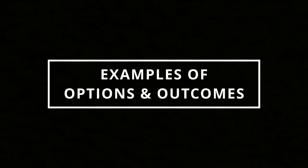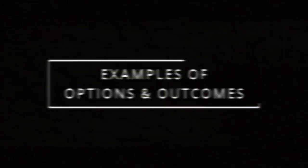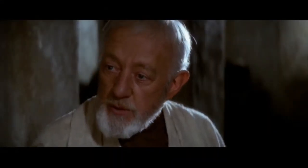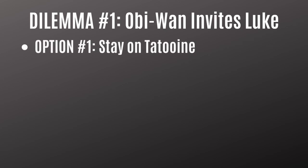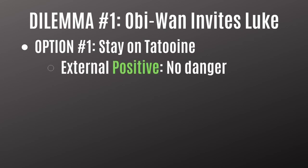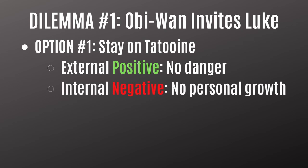Let me give you some examples from popular movies. Let's take a look at the original Star Wars. Early on, Obi-Wan asks Luke to come to Alderaan with him, so Luke has to make a decision. His first option is to stay on Tatooine and tell Obi-Wan no. The external outcome here is positive because Luke would not be putting himself in danger, would not be upsetting his uncle or aunt, and things would go along smoothly. However, the internal outcome is negative because he's losing an opportunity to grow as a human being and blowing a chance to defeat the Empire that he hates.